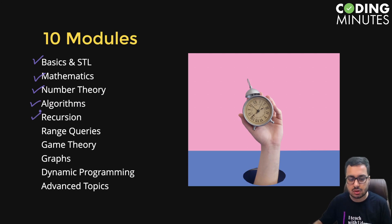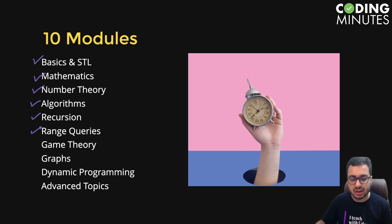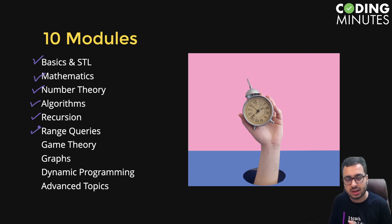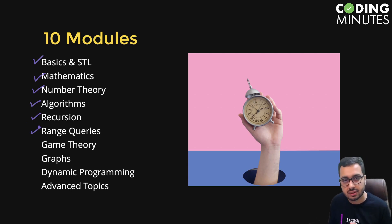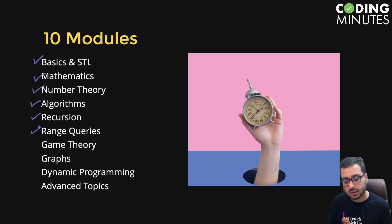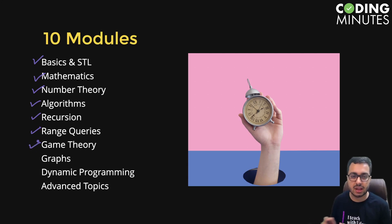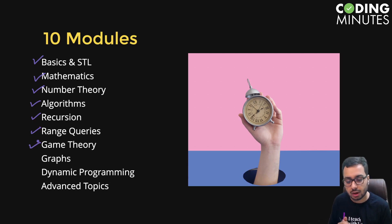Recursion is also part of the algorithms module. Then we have Range Queries — there are multiple ways to do range queries, including segment trees, Fenwick trees, and offline and online queries. We also cover Game Theory, including the game of Nim and the Sprague-Grundy theorem.